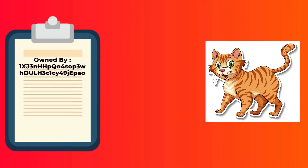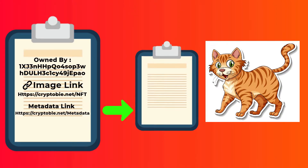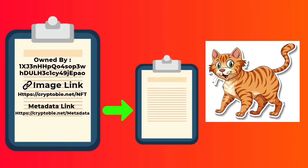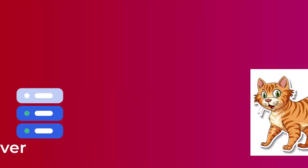Mainly it stores three important pieces of information: the current owner wallet address, a link to the image file, and a link to a metadata file. This metadata file includes information like the title of the image, the artist, description of the image, and the date it was created.